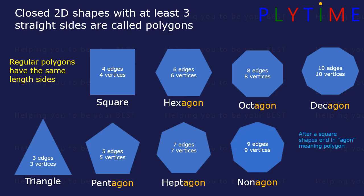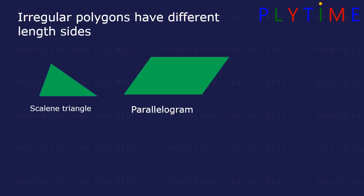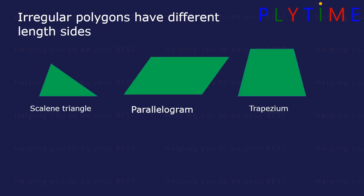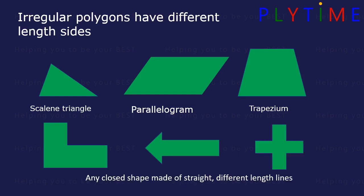After a square, shapes end in -agon, meaning a polygon. And a decagon has ten edges and vertices. Irregular polygons have different length sides, such as a scalene triangle, a parallelogram, or a trapezium. Any closed shape made of straight different-length lines is an irregular polygon.